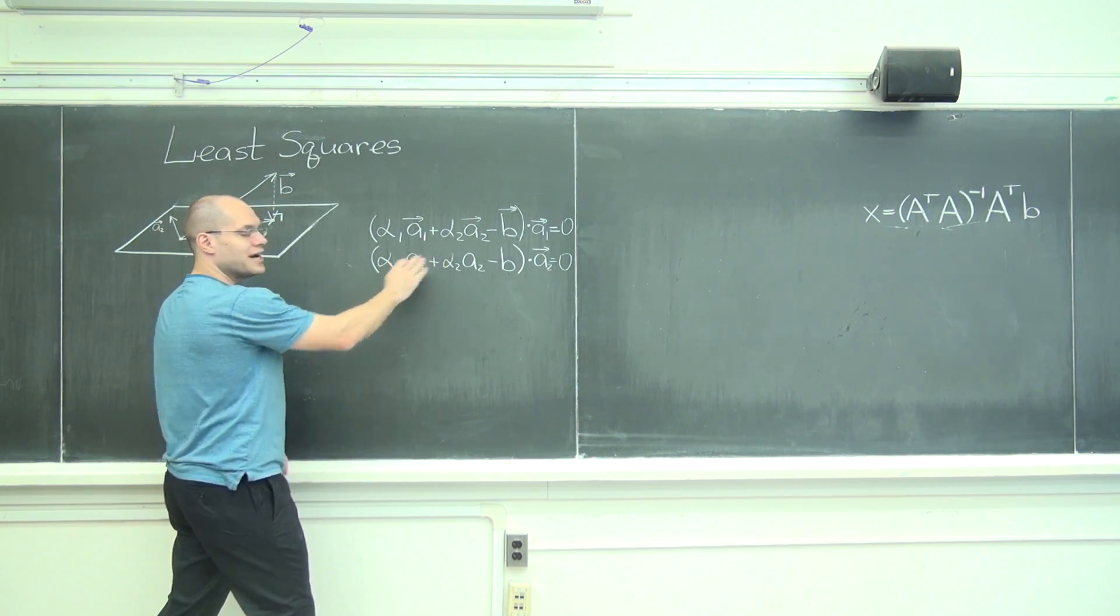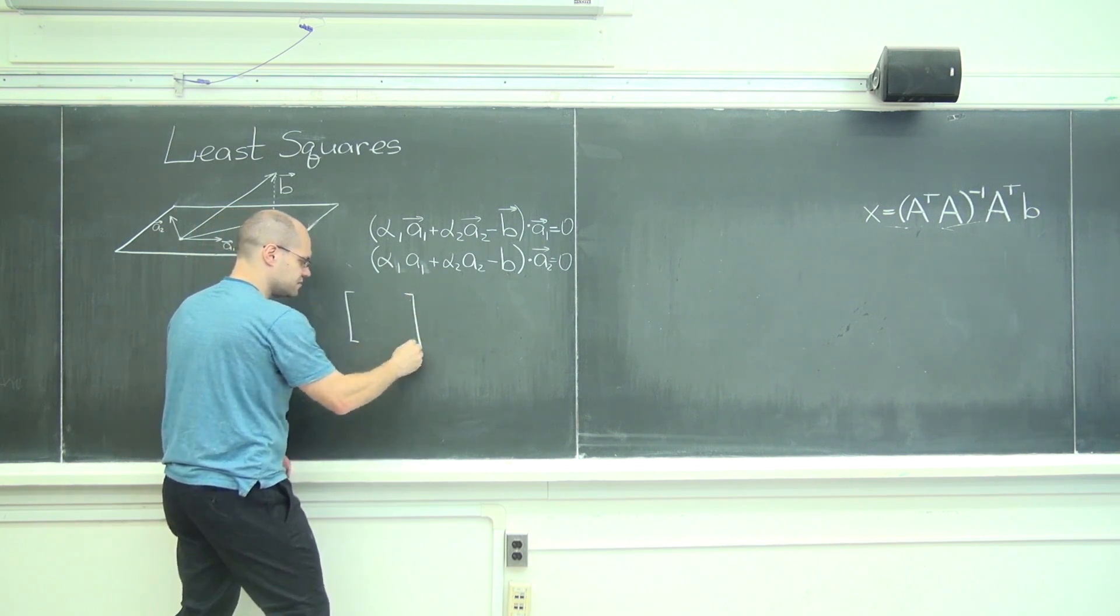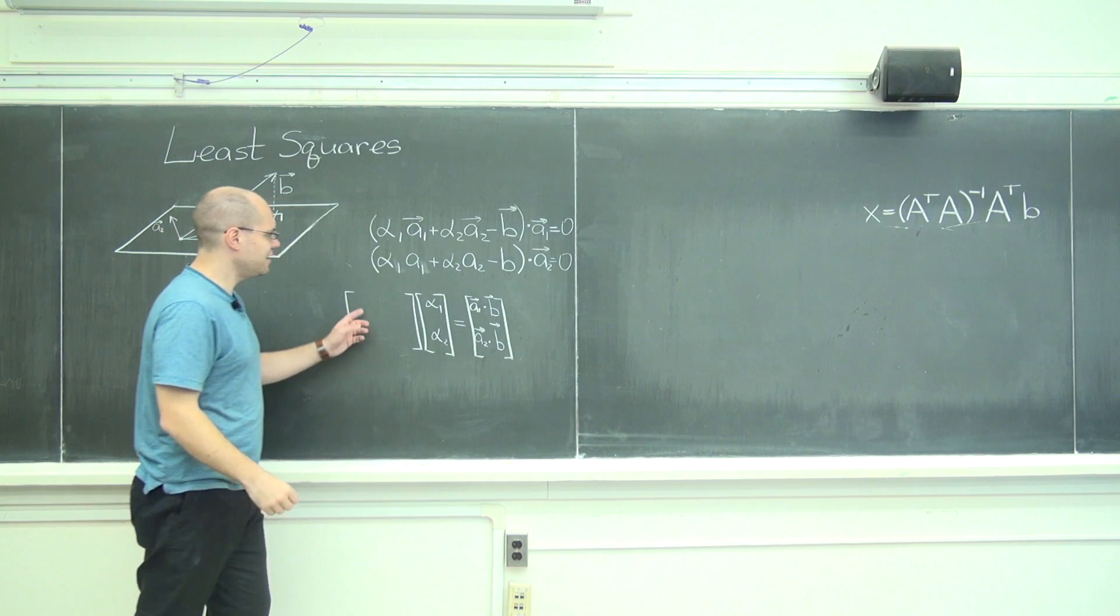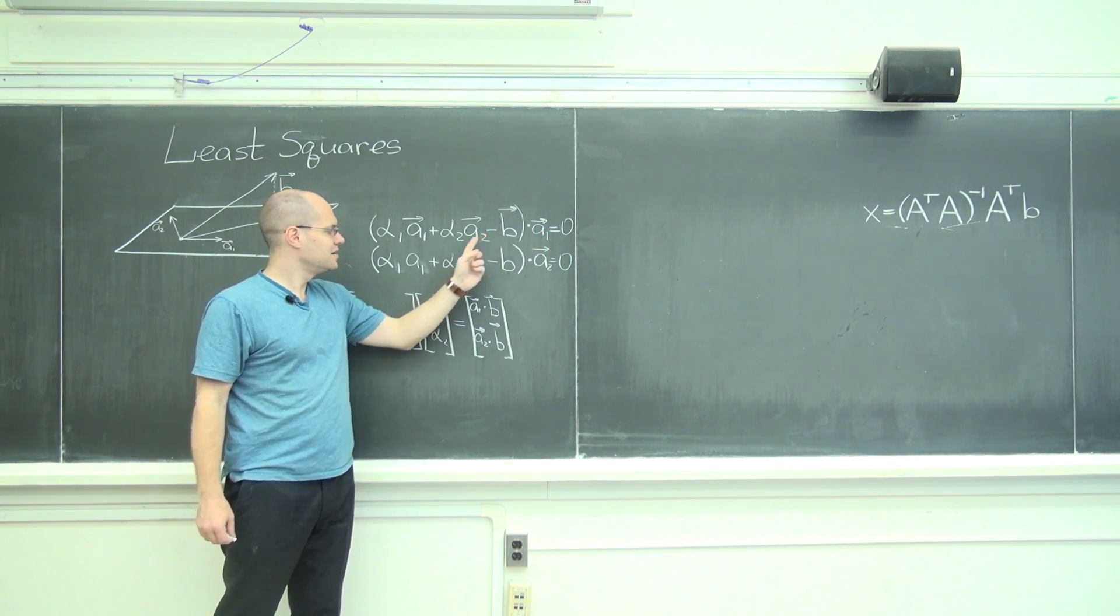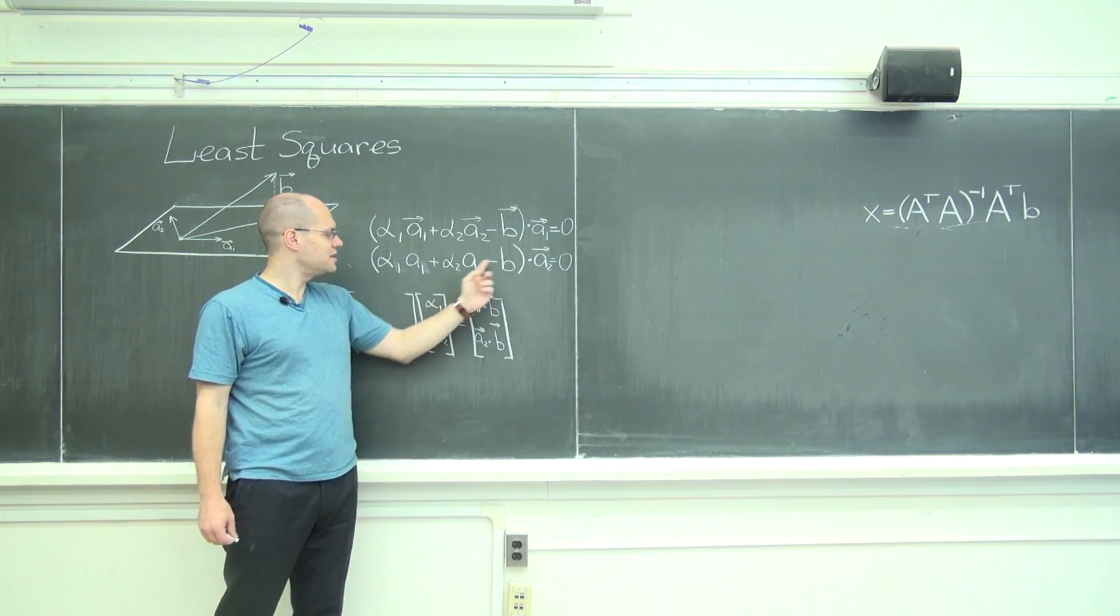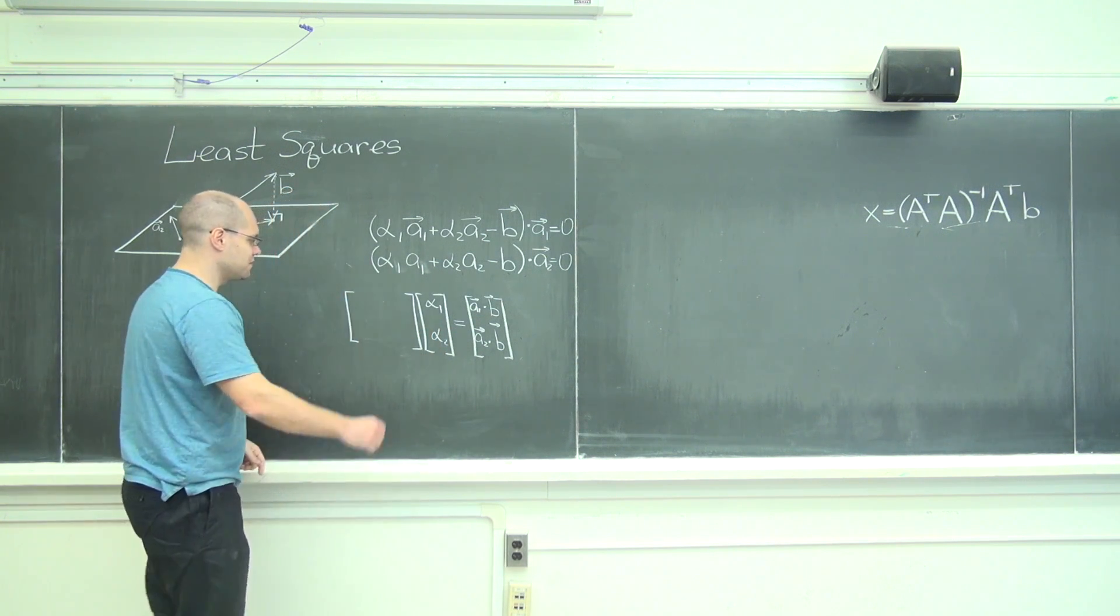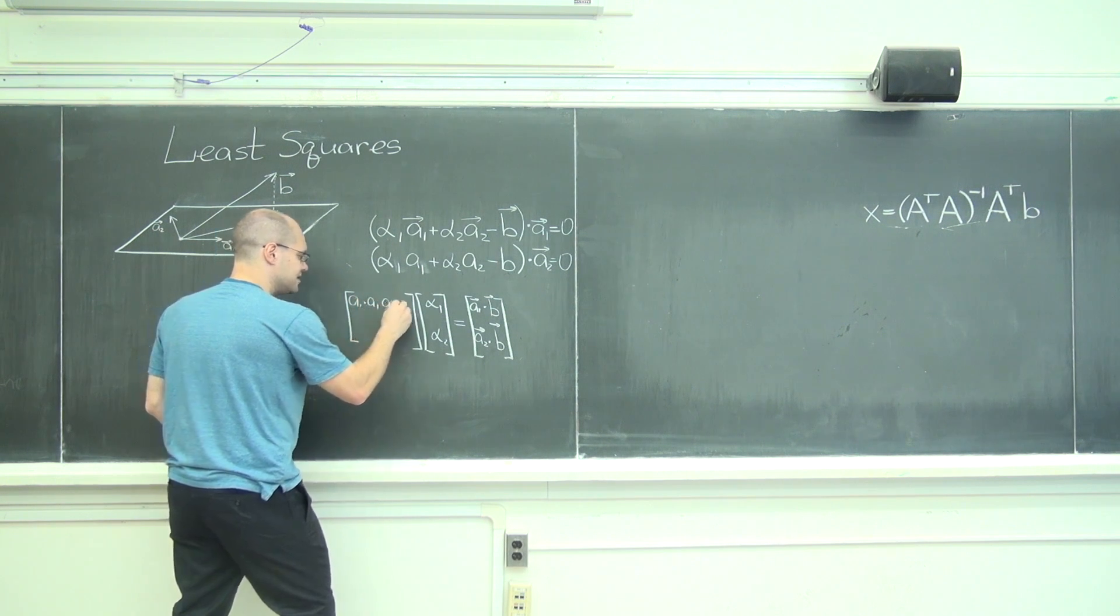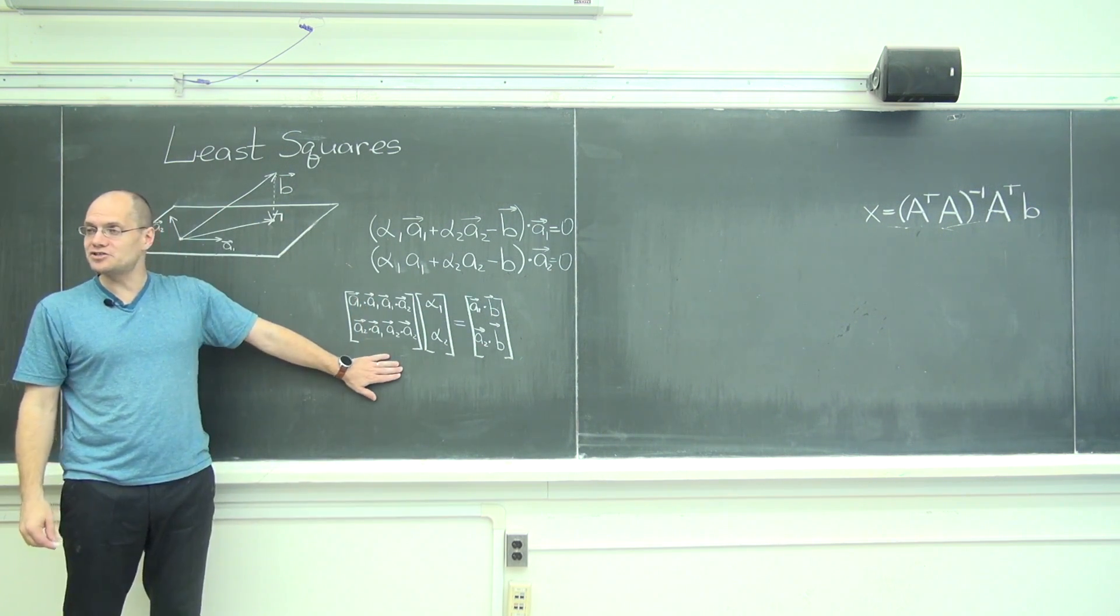I might as well just start writing it out in matrix form like this. Okay? And our matrix is A1 dotted with A1, A2 dotted with A1. You see it. A1 dotted with A2 and A2 dotted with A2. I'll use the symmetric property of the inner product to write it like this.